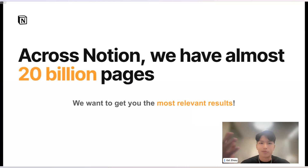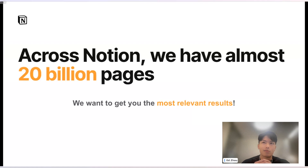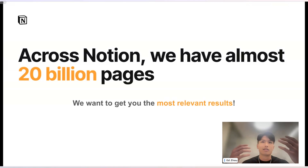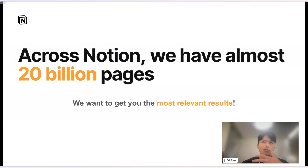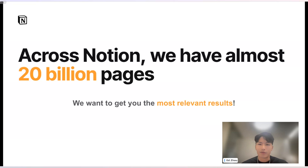Across Notion as a whole, we have almost 20 billion pages, which is a lot of information. The search team wants to get you the most relevant results when you issue a query. When you're doing a search, you're only looking for the information within your own workspace. But it's really common that when you type a query into the search box, you end up getting hundreds or even thousands of results that match the query itself, and we have to sift through all of those to get you what is important to you.